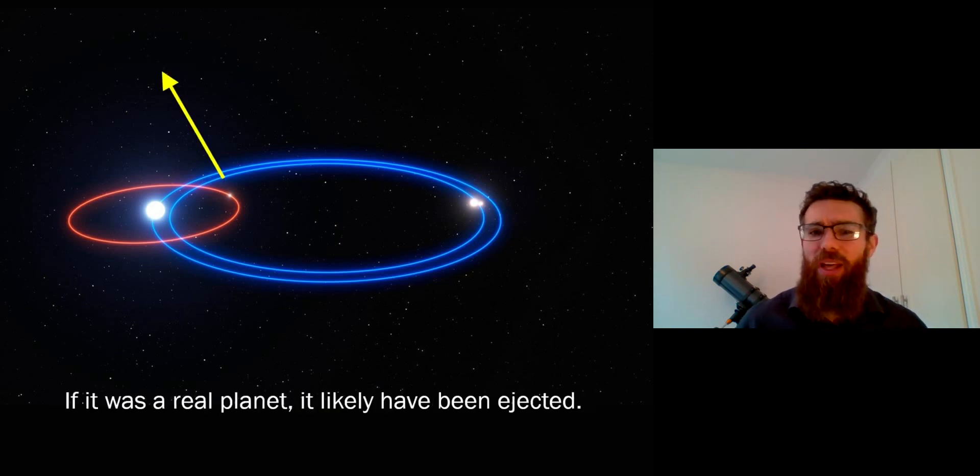And if it was a real planet, it's not thought that this would be stable. It's thought that it may actually be ejected from the system, which is not that uncommon for planetary systems.